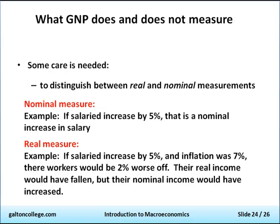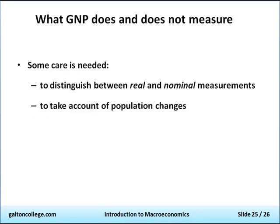When we compare gross national products between countries, we have to allow for the different rates of inflation. We also have to take account of the population. To say that a country has a GNP of X trillion dollars doesn't mean much, because if the population happens to be X billion, then on average the people are very poor. You might get a small country where the GNP is not very high, but there are very few people living there, and hence the people living there are very rich.